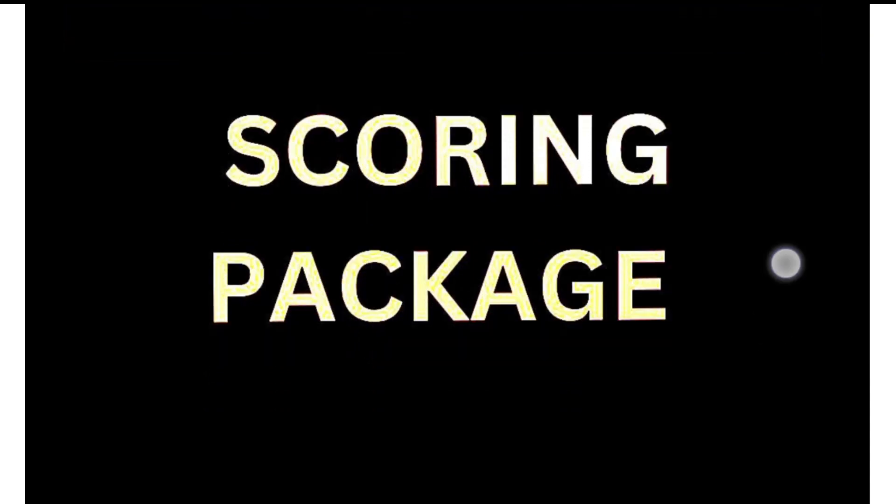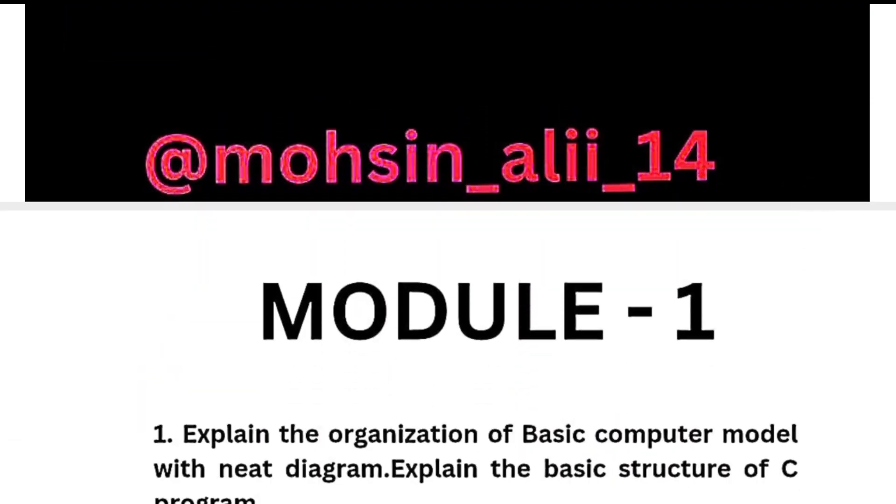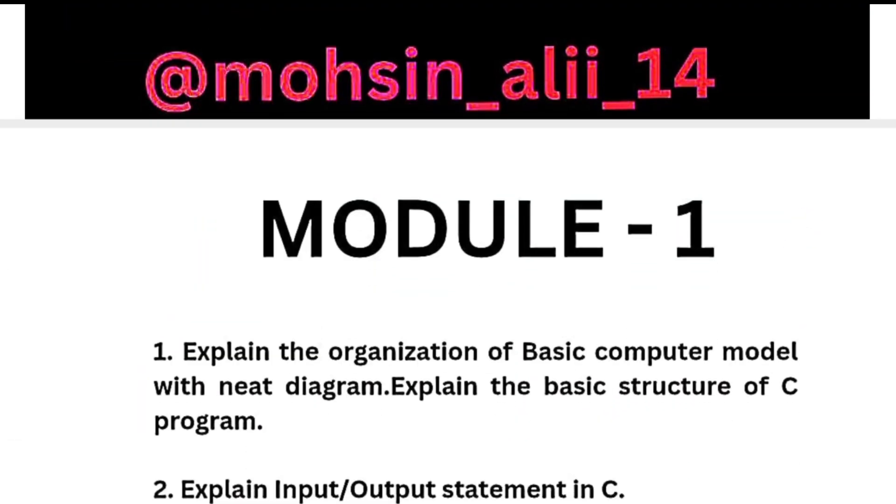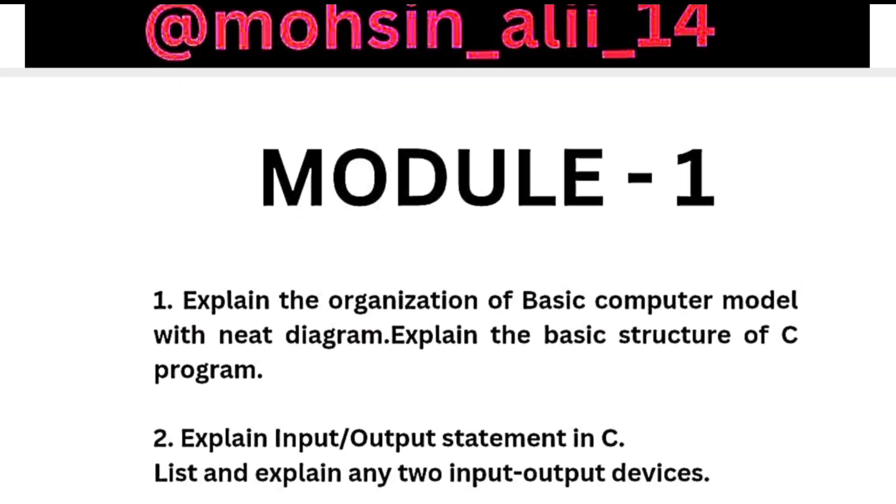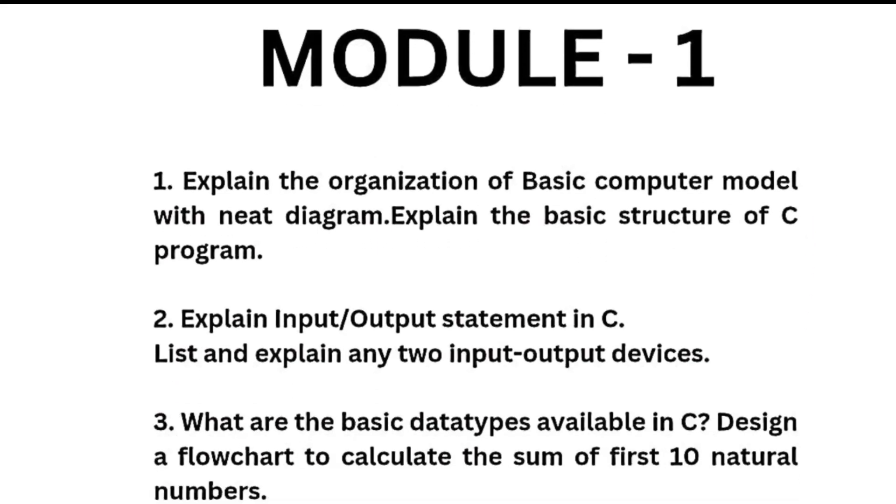Subject code is ABPOPS103203. Here is the module-wise scoring package. If you just go through these super important questions, you will surely get more than 80 marks in this particular subject. Module one has super important questions like explain the organization of basic computer model with neat diagram, explain the basic structure of C program.